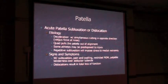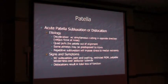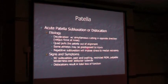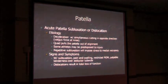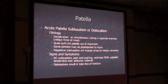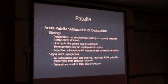Patella subluxation or dislocations usually occur secondary to a cutting or twisting movement at the knee. The quadriceps pulls the patella out of alignment. Some athletes are predisposed to the injury — high Q angles, patients that have any kind of abnormal retroversion or torsion in their legs may have a higher predisposition for kneecap dislocations.